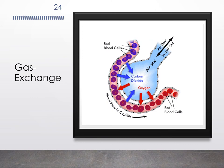Here's an image showing the basic process of gas exchange. As air flows into the alveoli, pressures are higher inside, causing oxygen to diffuse into the capillary. Since there's a higher concentration of carbon dioxide in the capillary, CO2 moves out of the capillary and into the alveoli so that it can be expired into the air.